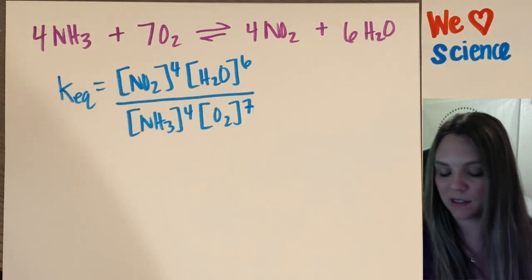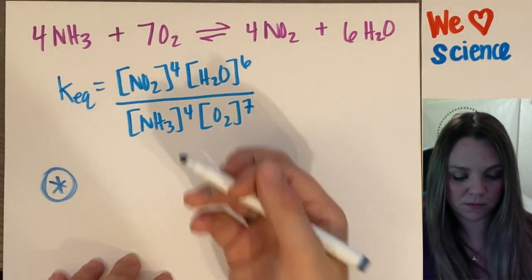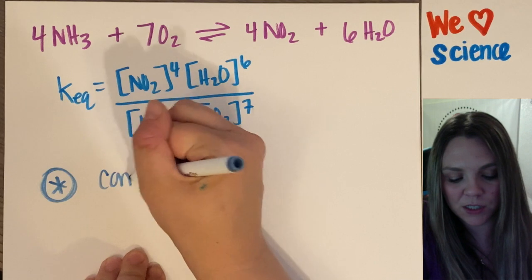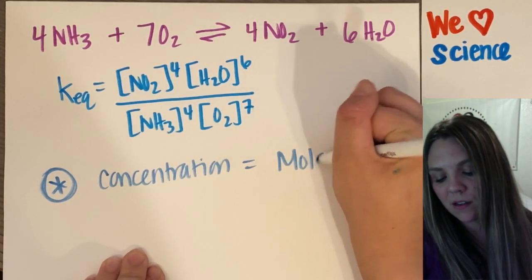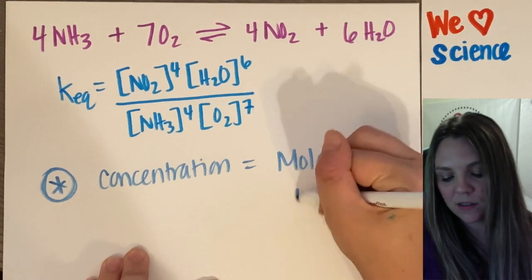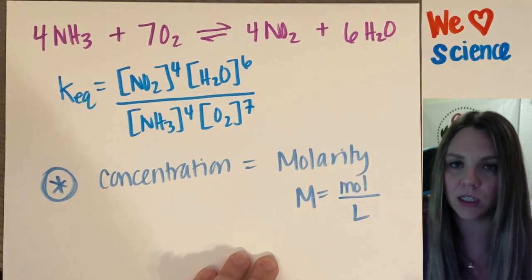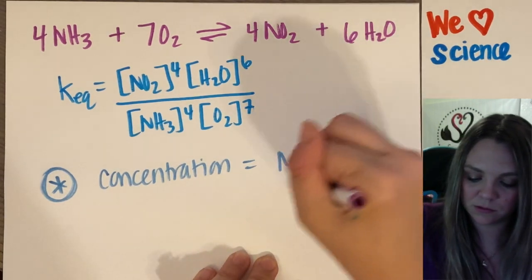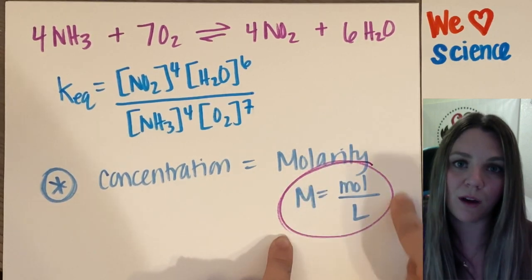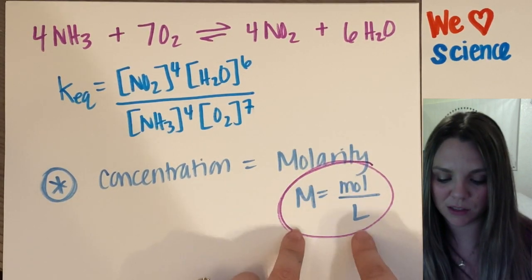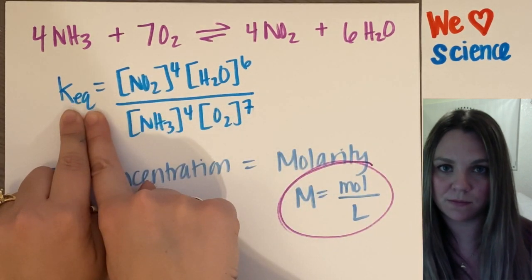A couple of points, just to make sure we don't mess this up, is that your concentrations are always going to be in molarity. So M equals moles per liter. Make sure you're good with your molarity equations. Make sure you know how to calculate that stuff because you have to plug in the molarities to calculate the K of EQ.